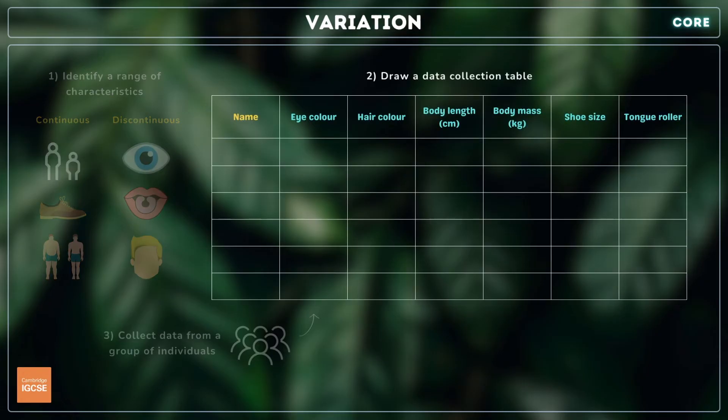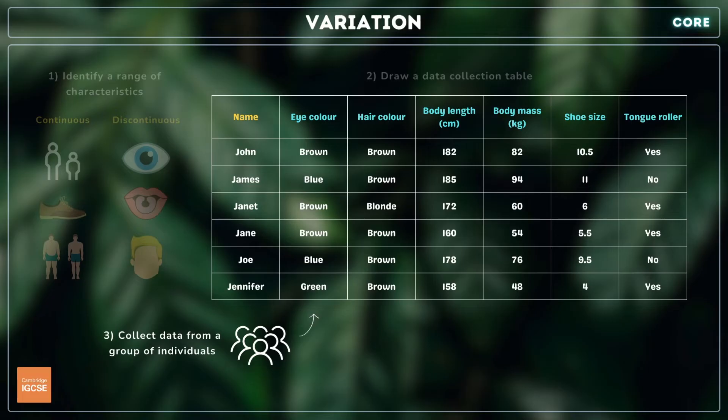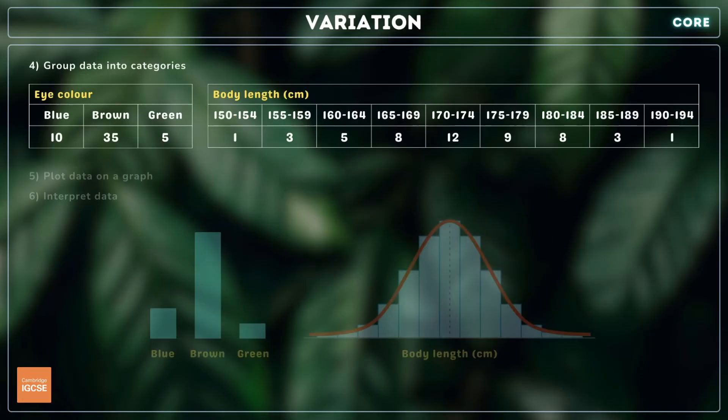Create a data collection table. Select a group of people, the larger the sample size the better, and collect your data. Group the data into categories. For characteristics like eye colour, this is as simple as counting how many people have brown, blue, and green eyes. But for discontinuous characteristics like height, you'll need to create your own data ranges.